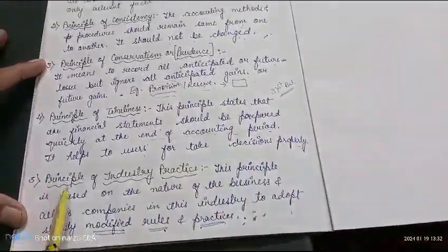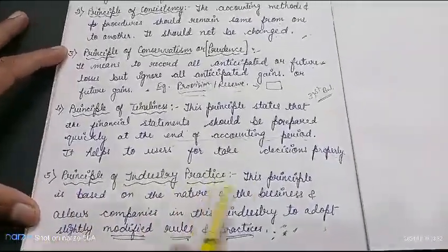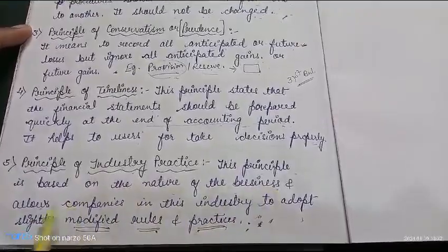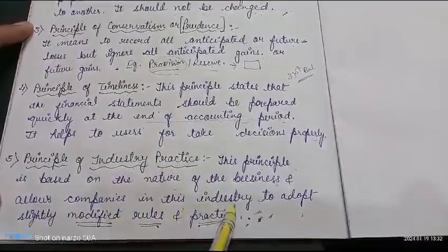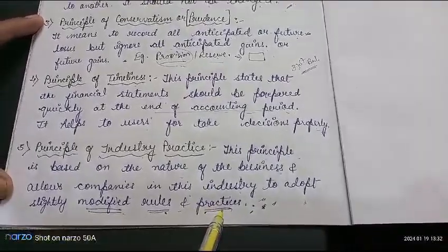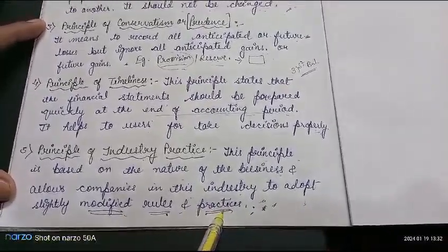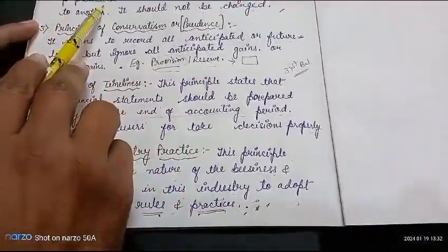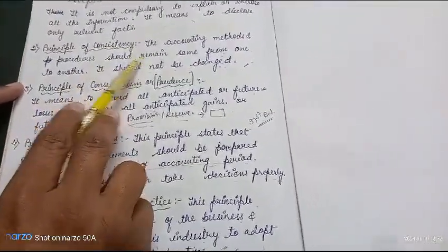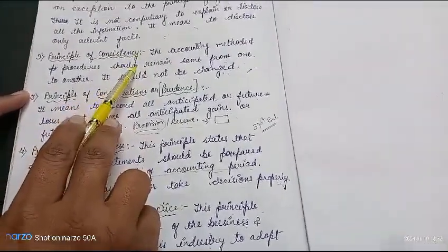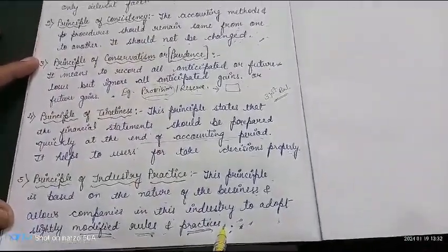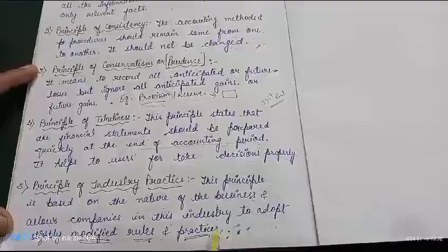The last principle is the principle of industry practice. This principle is based on the nature of the business and allows companies in an industry to adopt slightly modified rules and practices. The accounting principles will never fundamentally change, but the specific methods can be adjusted a little bit depending on the situation and industry.